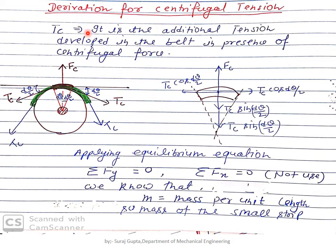Now we derive the formula for centrifugal tension Tc — the additional tension developed in the belt due to centrifugal force. Consider a small strip of the belt subtending an angle dθ at the center. At every point, centrifugal force acts tangentially outward. The half-angle at each side of the strip is dθ/2, and the centrifugal force Fc acts radially outward from the center.